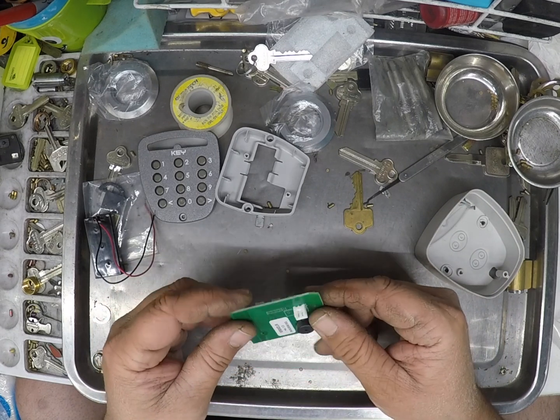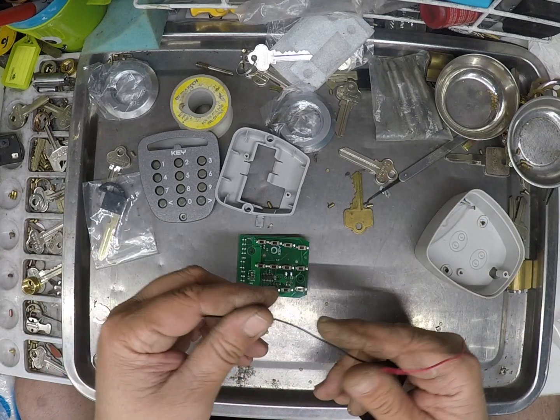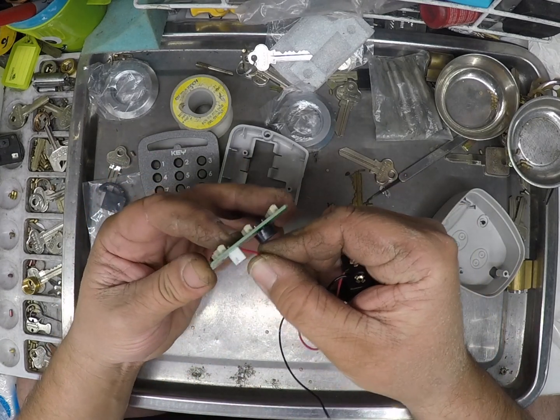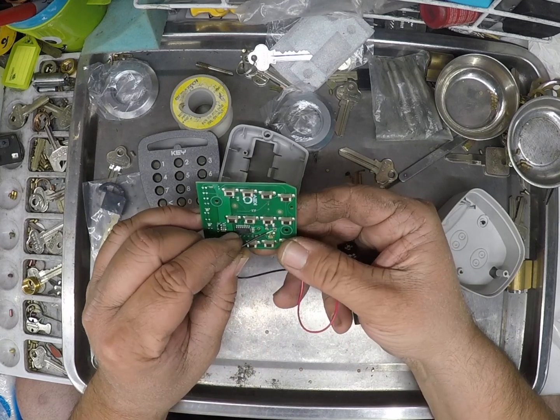So what I need to do is solder this touching these two terminals here and then we should be good to go. One of the terminals is fairly easy. It just comes straight through here and then the other one has to be positioned touching that right there.